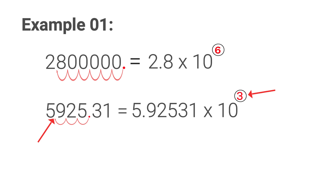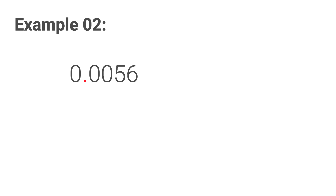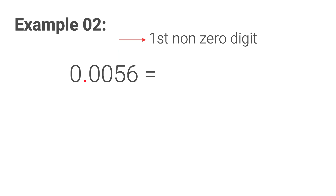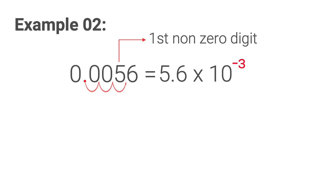What if the number is less than one? Say this: zero point zero zero five six. Here we move the decimal point back until it comes to the first non-zero digit — a non-zero digit is a digit which is not zero. The first non-zero digit is five here, so we bring the decimal point back to five. Then our first part becomes five point six. While coming back we passed three digits, so the power of ten is three, but since we came back we put the power as minus three. Then it is five point six into ten to the power minus three.